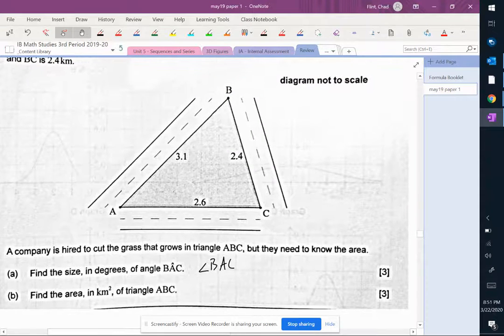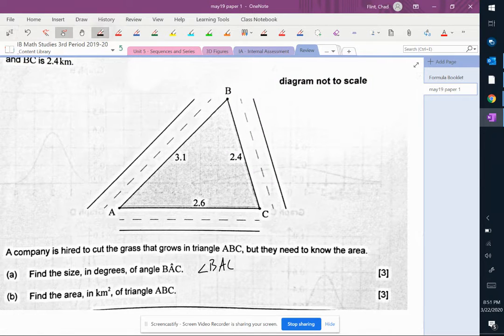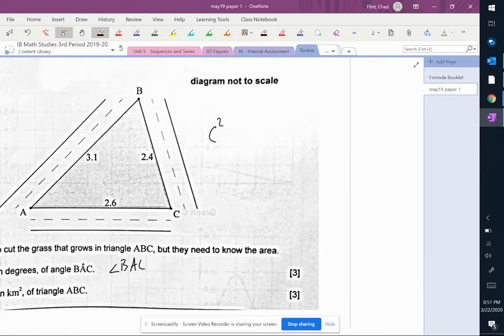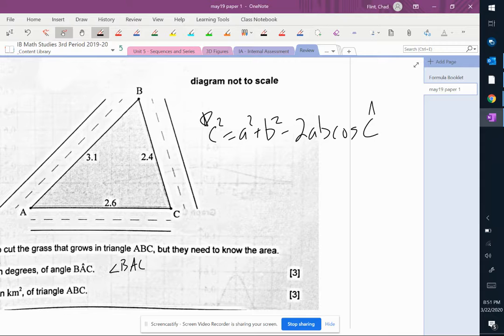So if I want to find an angle and all I know are sides, I'm going to have to use the law of cosines, which is right down here. C squared equals A squared plus B squared minus 2AB cosine C. That's on your formula sheet. The big thing here is this side and this angle have to be opposite each other.